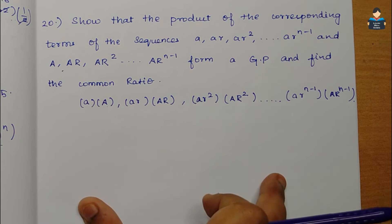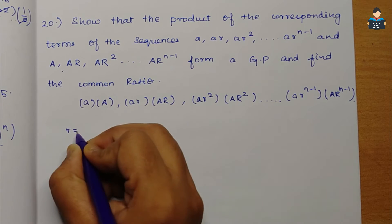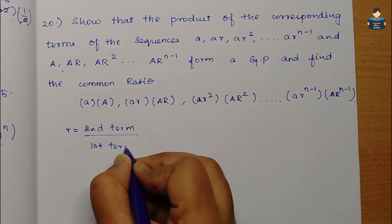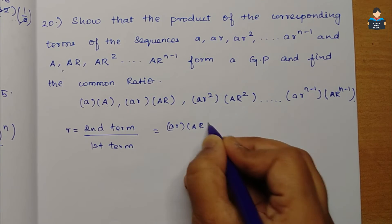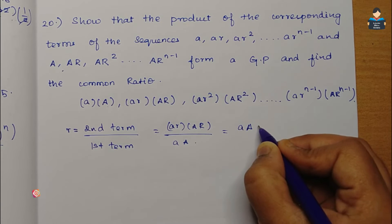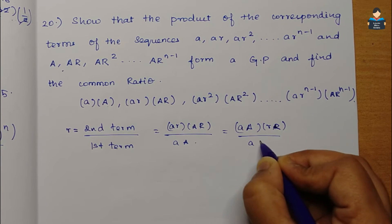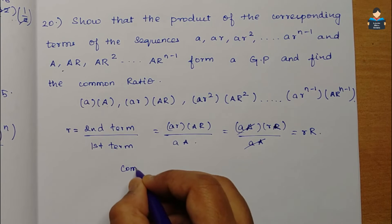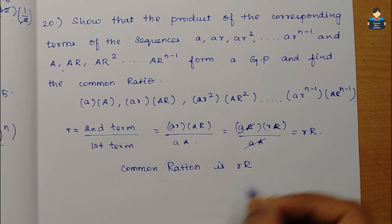To find the common ratio, we compute r = second term / first term. The second product term is arAR and the first is aA. Cancelling aA from numerator and denominator, the common ratio = rR.